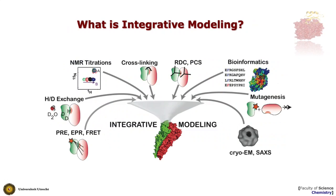When we speak of integrative modeling in the field, we are referring to the use of not only one source of data, but multiple sources of information, which used together allow you to solve large complex assembly problems. And this is just an illustration of some of the data that are useful in this context.